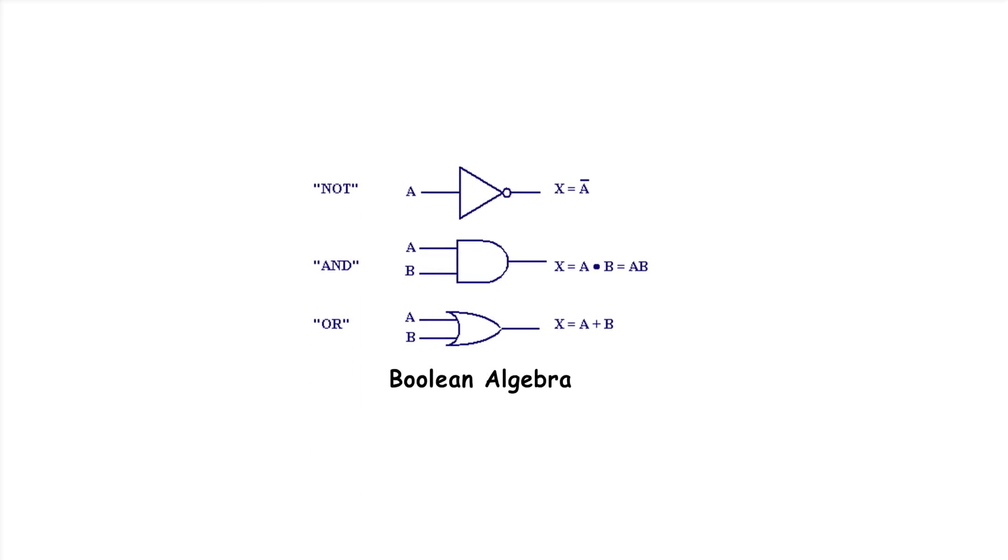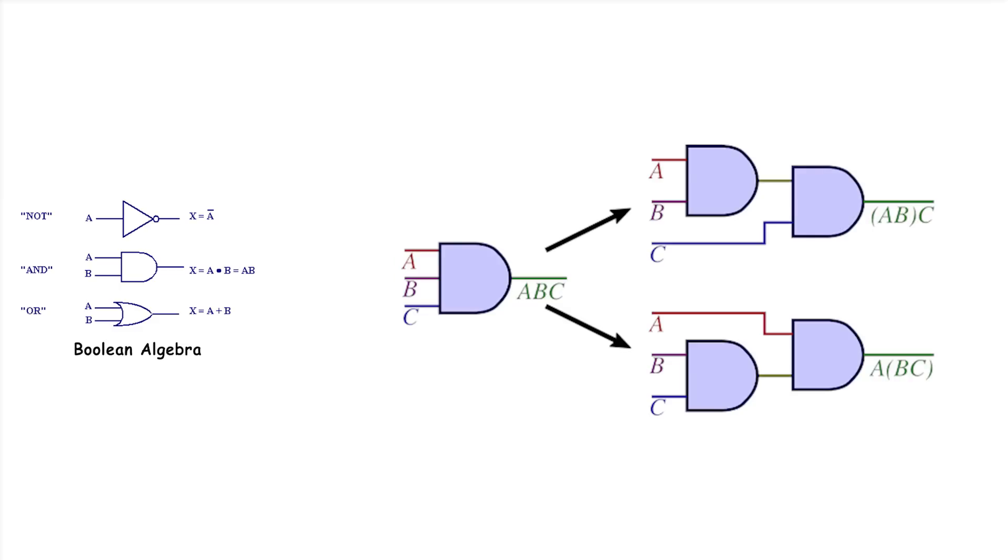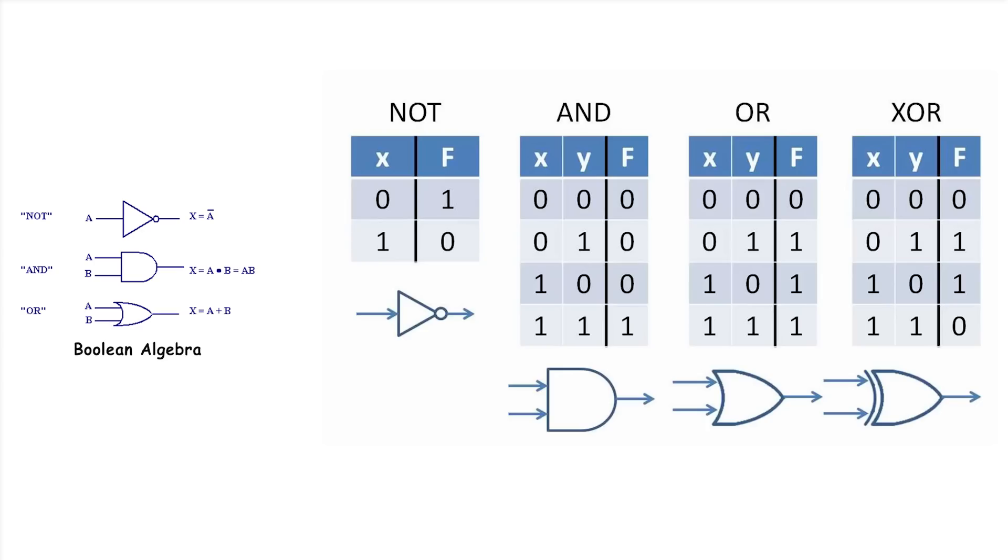Boolean algebra. Boolean algebra is a branch of algebra that deals with true or false values, binary variables. It's used in computer science and digital logic to perform logical operations. For example, in Boolean algebra, AND, OR, and NOT are basic operations that combine or invert true-false values.